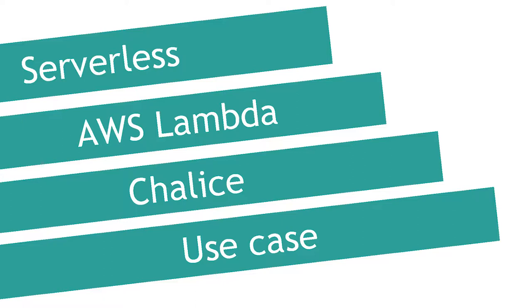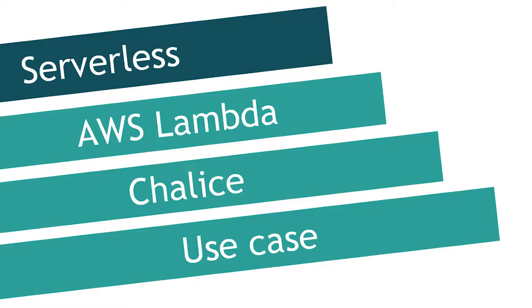Today I will tell you a little bit about serverless. In the beginning, I will briefly cover the theory — what serverless is and how it's different from other cloud solutions. Then I will say a few words about AWS Lambda, the most popular serverless platform. In the second part, I will show how Chalice can help you and then demonstrate it on a simple use case. I hope after the presentation there will be some time for your questions and discussions.